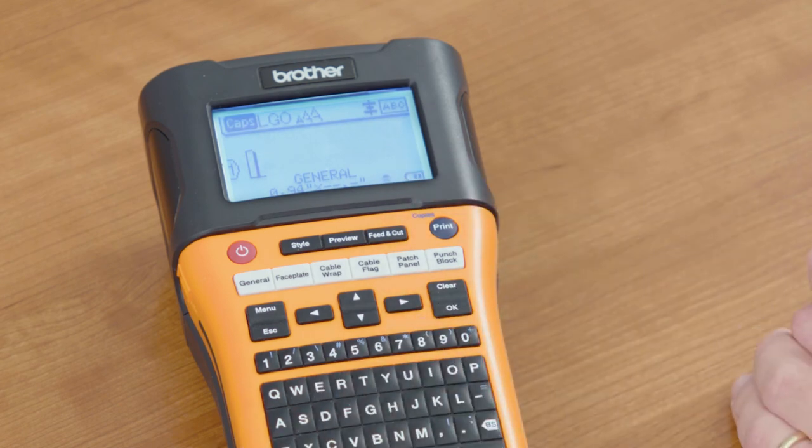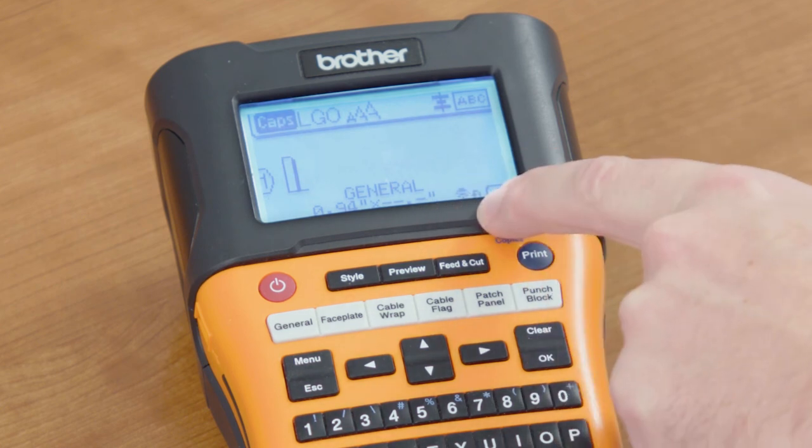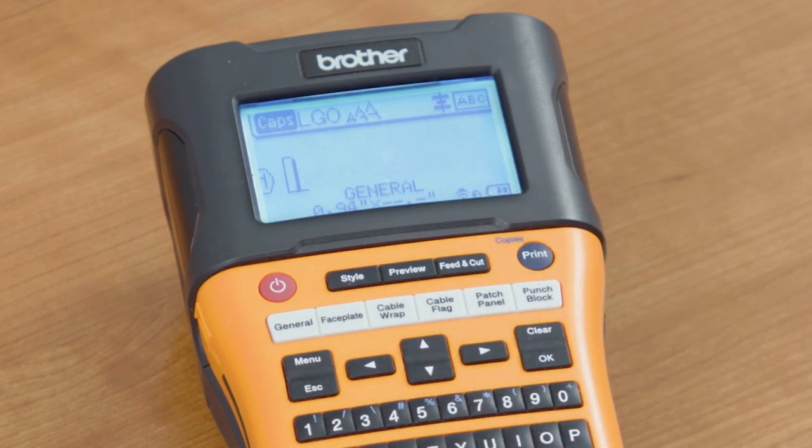Wi-Fi is starting up. Once this is lit solid and you have the little D with the line through it, your Wi-Fi is set up. It's ready to go and you can connect your mobile device.